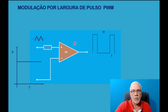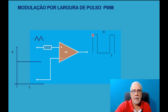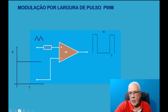O amplificador operacional está sempre presente nos circuitos que trabalham com controle. Como se trata de eletrônica analógica, o amplificador operacional ocupa uma grande fatia das aplicações. Aqui nós temos a onda triangular aplicada à entrada não inversora do amplificador operacional, e na entrada inversora temos o nível de tensão contínua que vai cruzar essa onda triangular em algum ponto. À medida que eu reduzo ou aumento o nível de tensão contínua, haverá uma diferença na largura do pulso. Se ele cruzar a onda triangular na base, você terá uma largura de pulso muito maior; se cruzar próximo do topo, a largura de pulso será bem menor.